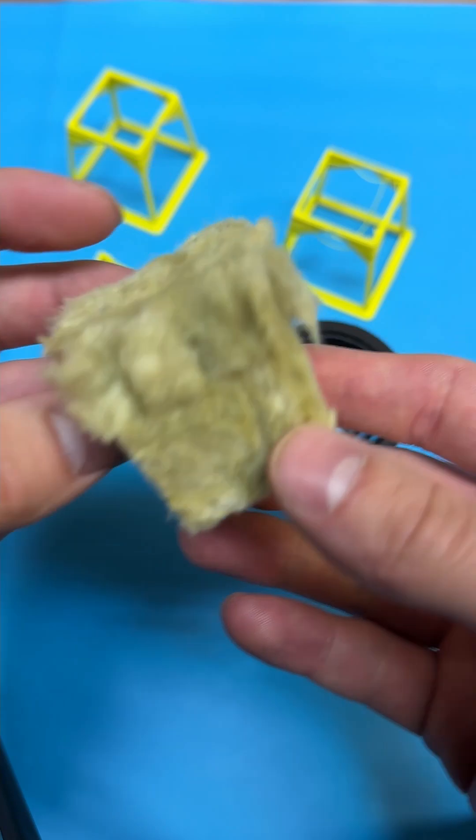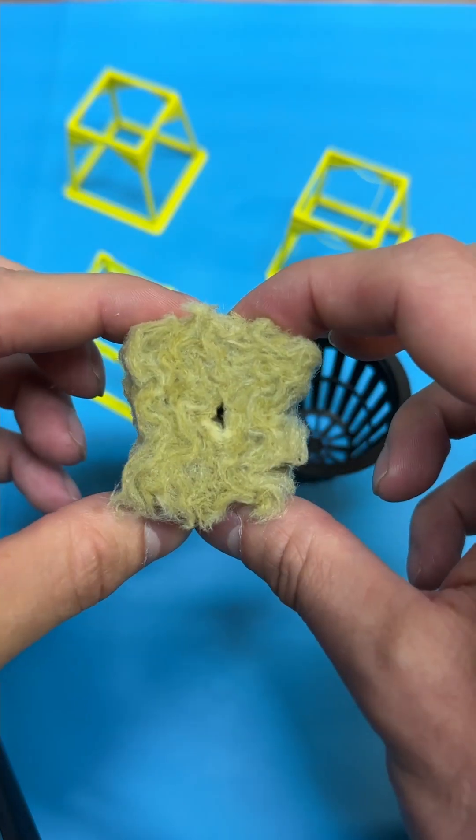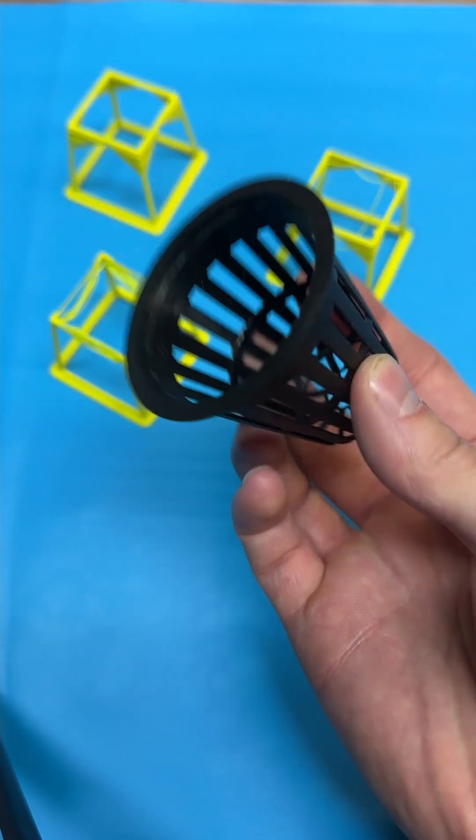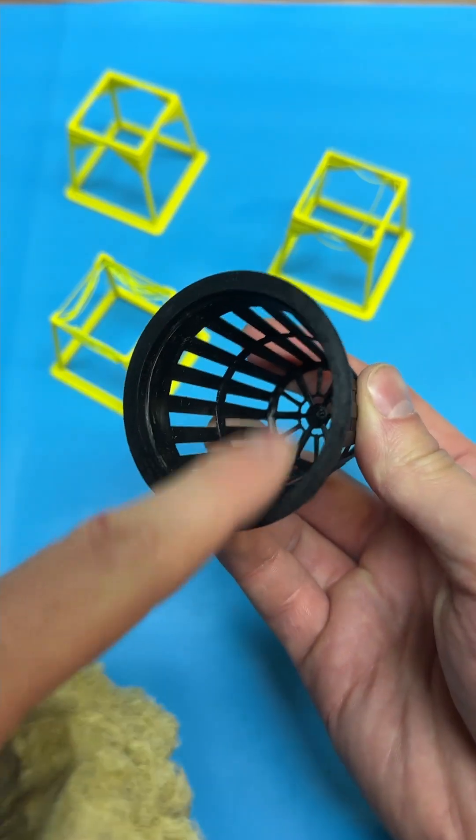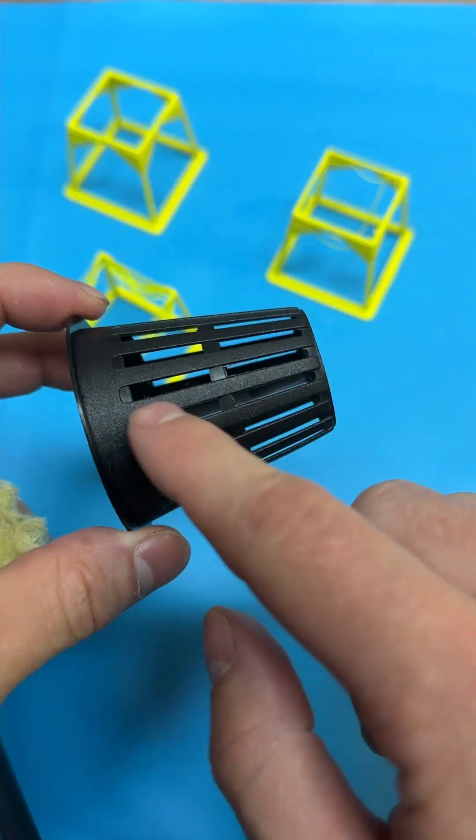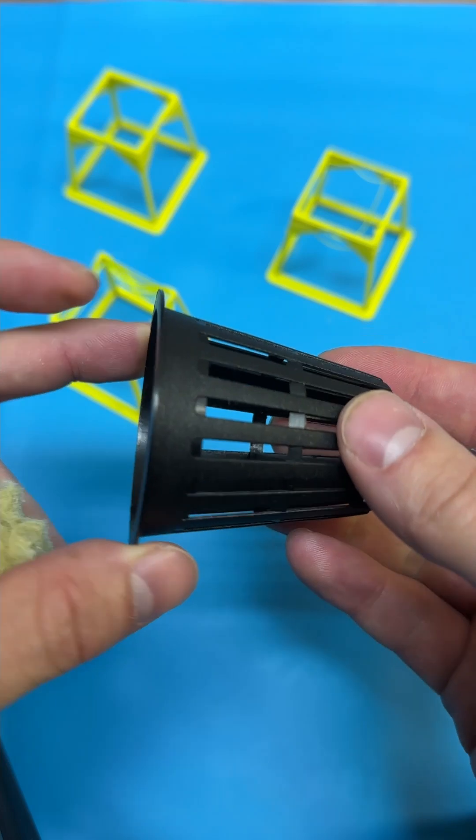These are rockwool starter cubes and like the name implies they're cubes. And then they sell these little baskets that are all circular in shape. They also have these very small slots for the roots to grow out of.